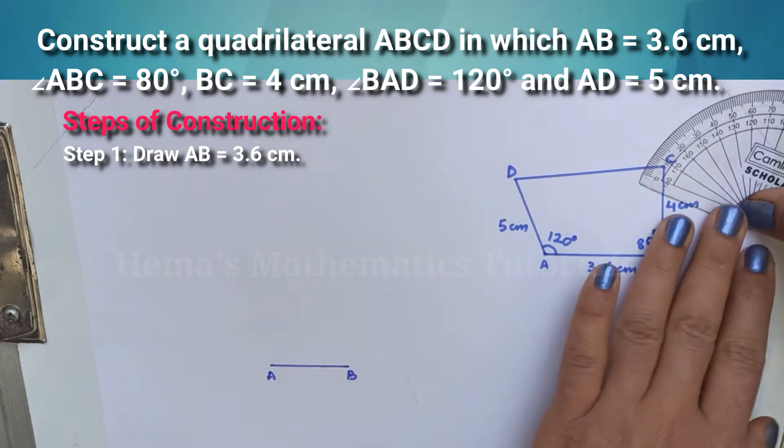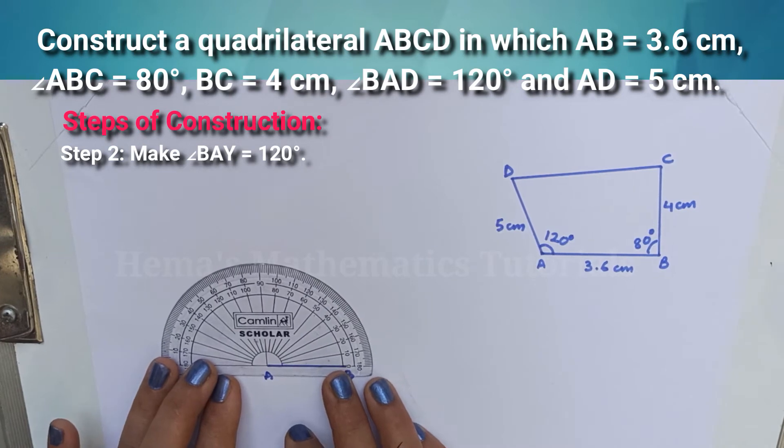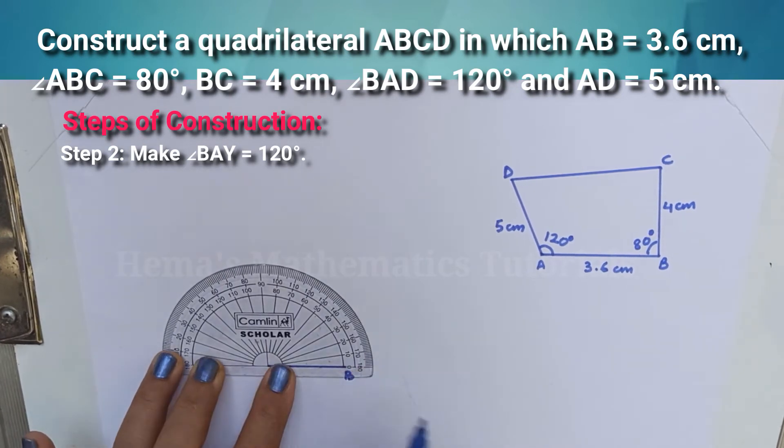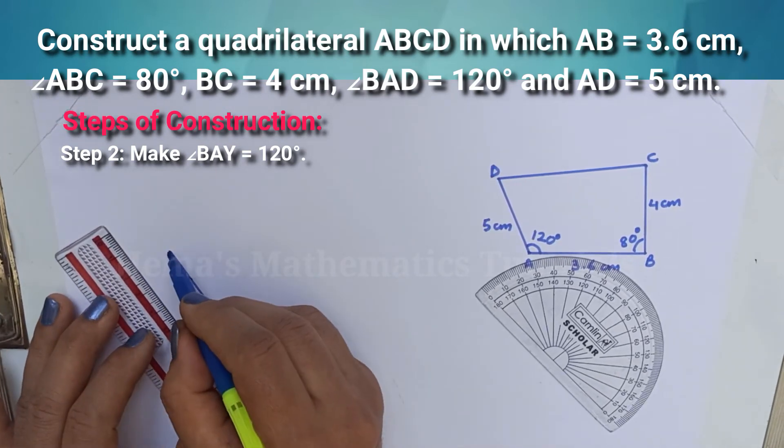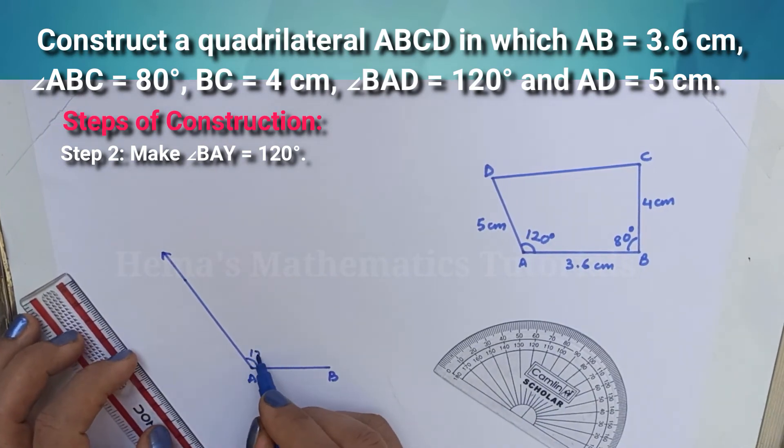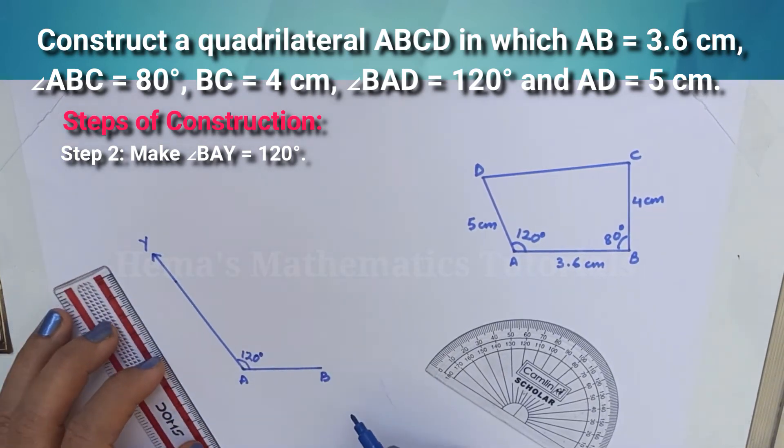Now, with the help of a protractor, make angle A equal to 120 degrees. Angle BAY is equal to 120 degrees.